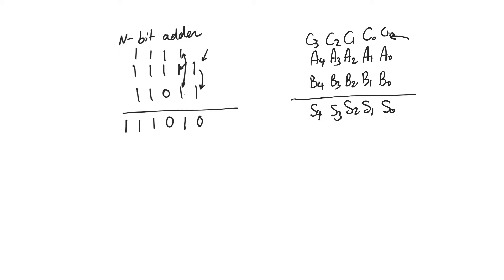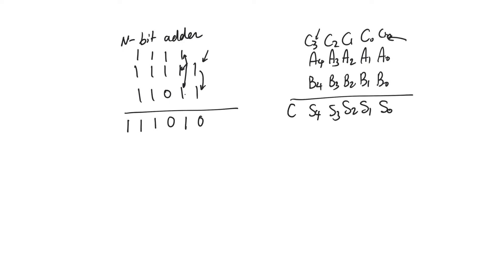So we're also going to assume that the first bit position is going to use a full adder rather than a half adder. Now, in the last bit position, we're going to add C3, A4, and B4 to produce S4 and carry C4. Carry C4 is not going to be added to anything, but it's going to become part of the final output.